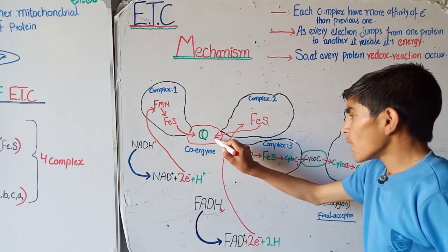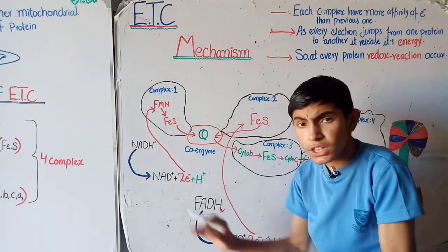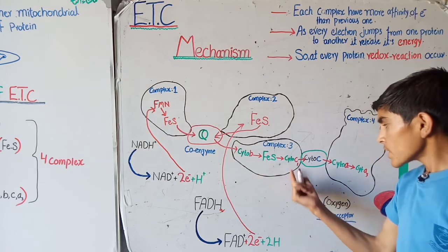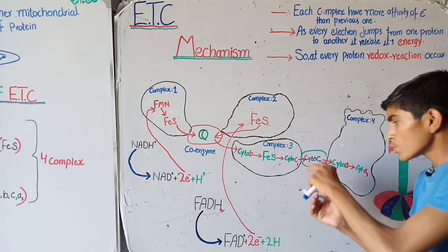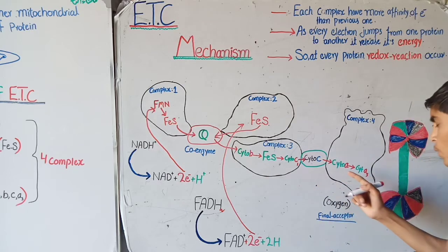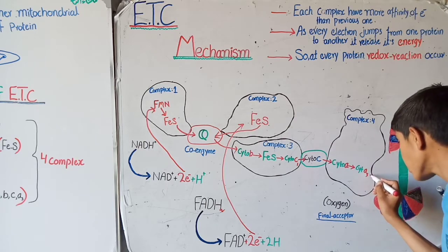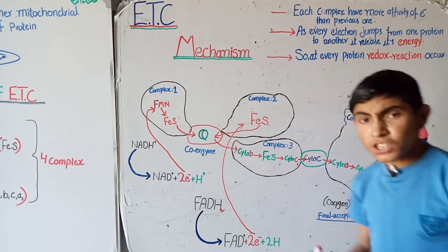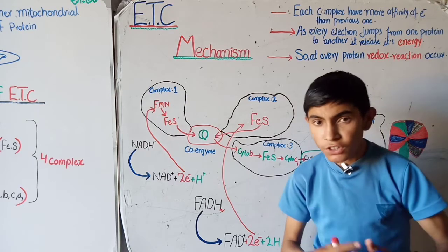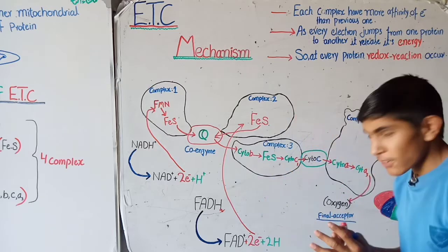Ubiquinone collects electrons from both complex one and complex two and passes them to complex three. In complex three there is no additional input of NADH or FADH2; the electrons are passed through cytochrome b, iron-sulfur protein, and cytochrome c1, then to cytochrome c. Cytochrome c transfers the electrons to complex four, where cytochrome a and cytochrome a3 are located. The final electron acceptor, cytochrome a3, passes the electrons to oxygen.